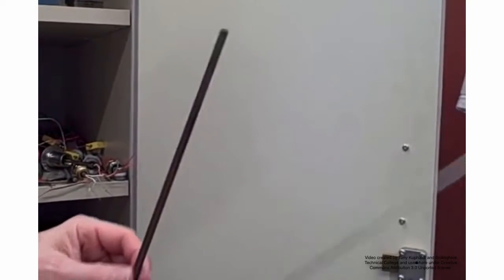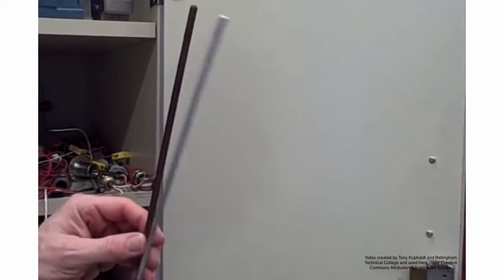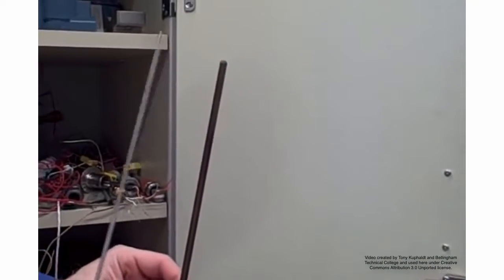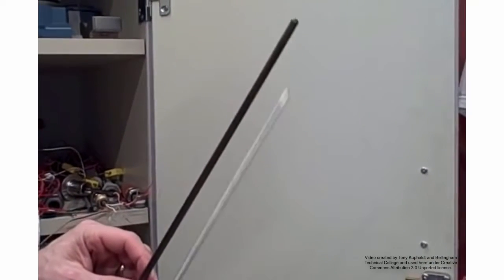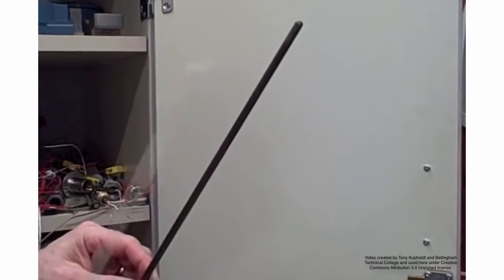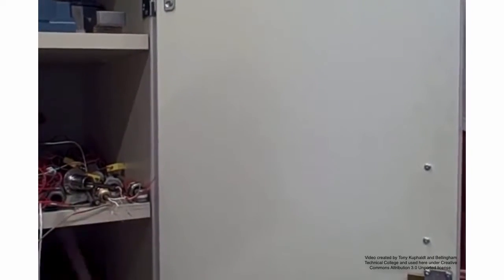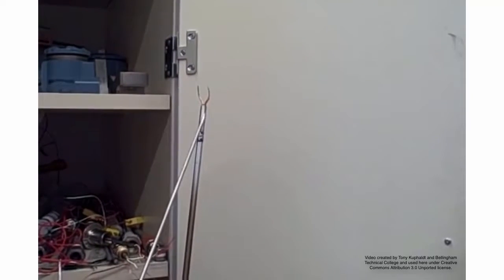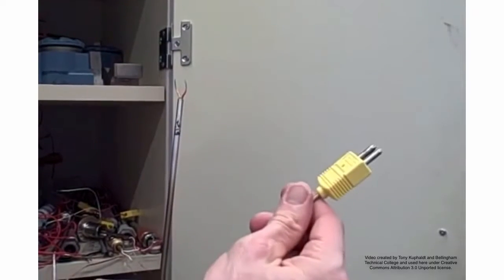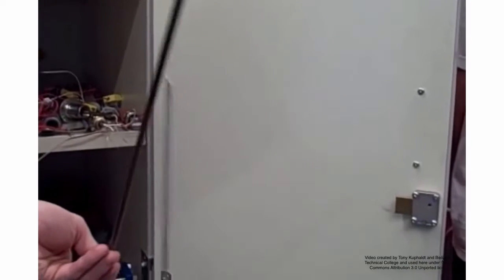Now the question was asked earlier, can we tell if this is grounded or ungrounded? You cannot tell that visually. You can only tell that with a meter. The difference between a grounded and ungrounded thermocouple is internal, and you cannot see it without cutting it open. We would have to take an ohmmeter and measure for continuity between either one of the wires and the stainless steel sheath in both cases.